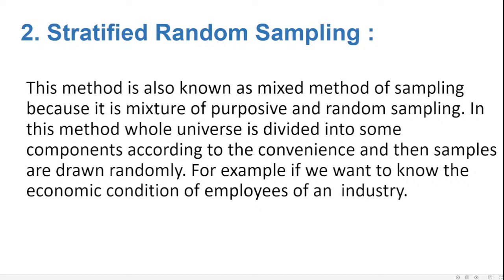Another method is stratified random sampling, otherwise known as mixed method of sampling. It is a mixture of purposive and random sampling. The whole universe is divided into some components according to convenience, and then samples are drawn randomly from each component.